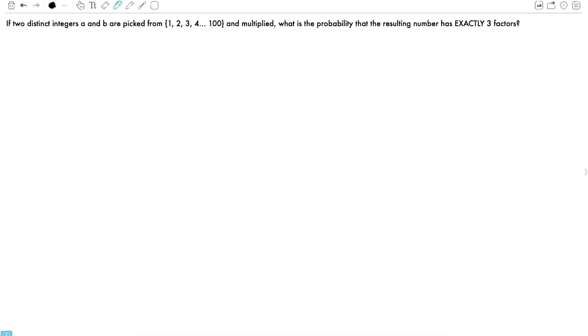If two distinct integers a and b are picked from the range 1 to 100 and multiplied, what is the probability that the resulting number has exactly three factors? So let us summarize this question as follows. If n is a number obtained by multiplying a and b, we could write n as a times b. The properties of a and b are such that a and b are distinct. In other words, a cannot be equal to b. Furthermore, a and b should fall in the range 1 to 100.